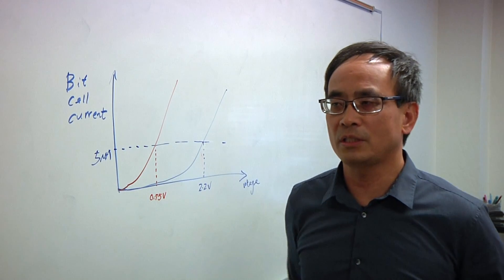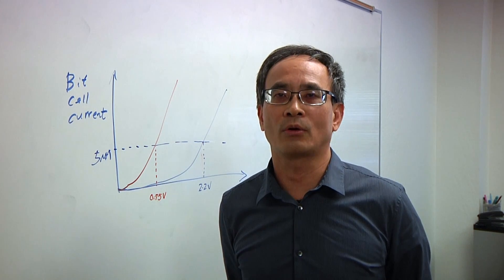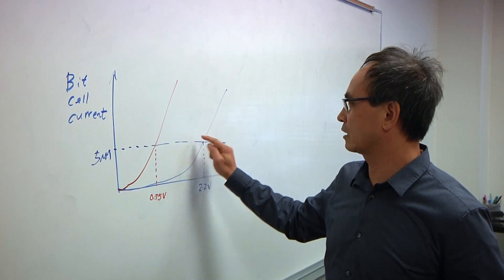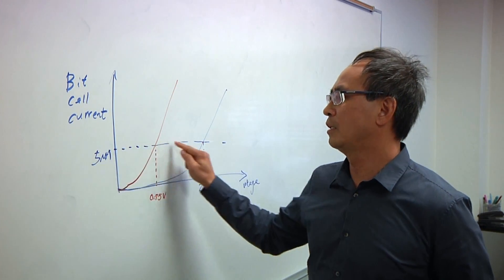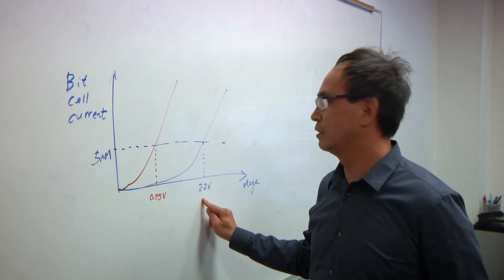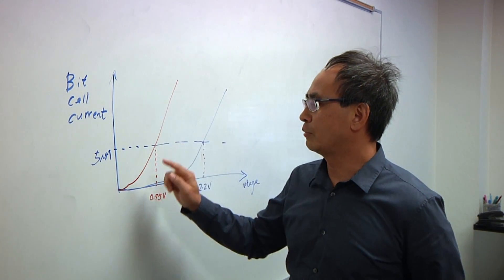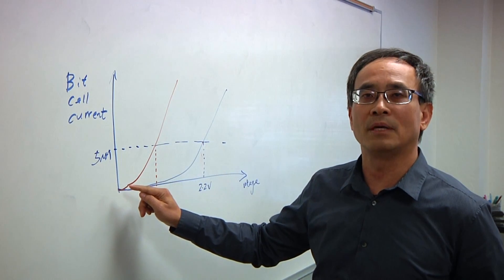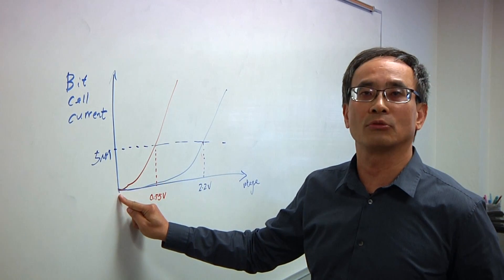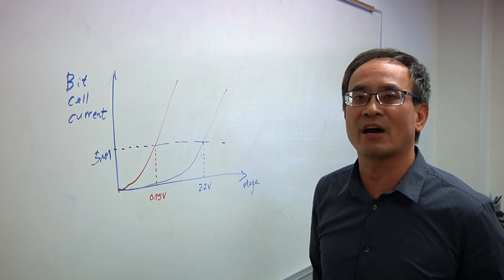The majority of the problem right now is in the read power. So I just explained, usually in the older technology, in current technology, we have a 5 microamp sense amp requirement, which will correspond to 2.2 volts operating voltage to read. So we have been establishing a new memory cell technology, which can achieve almost 0 turn-on voltage. So at the 5 microamp, it only goes on to 0.75 volts.